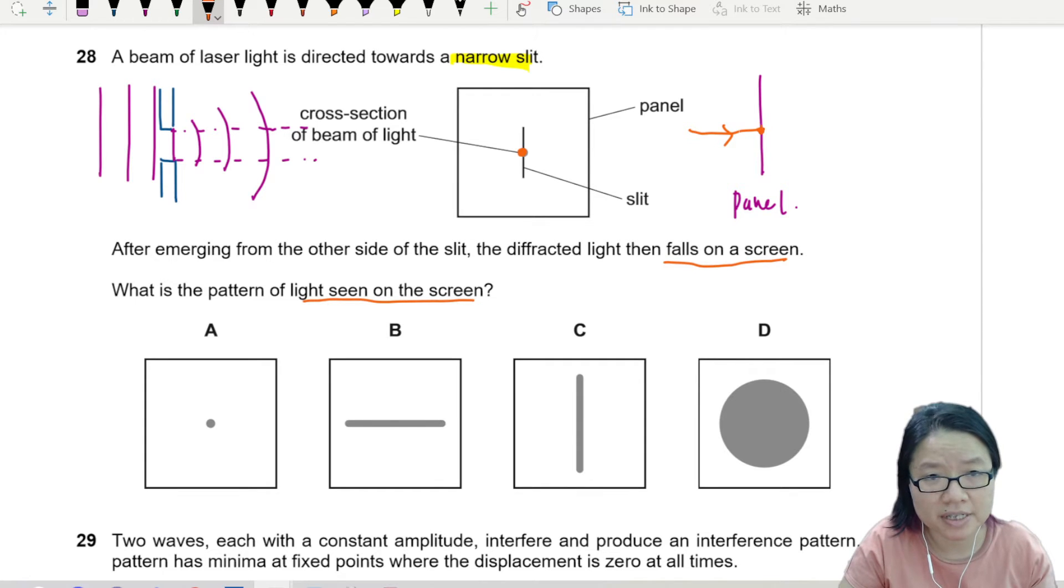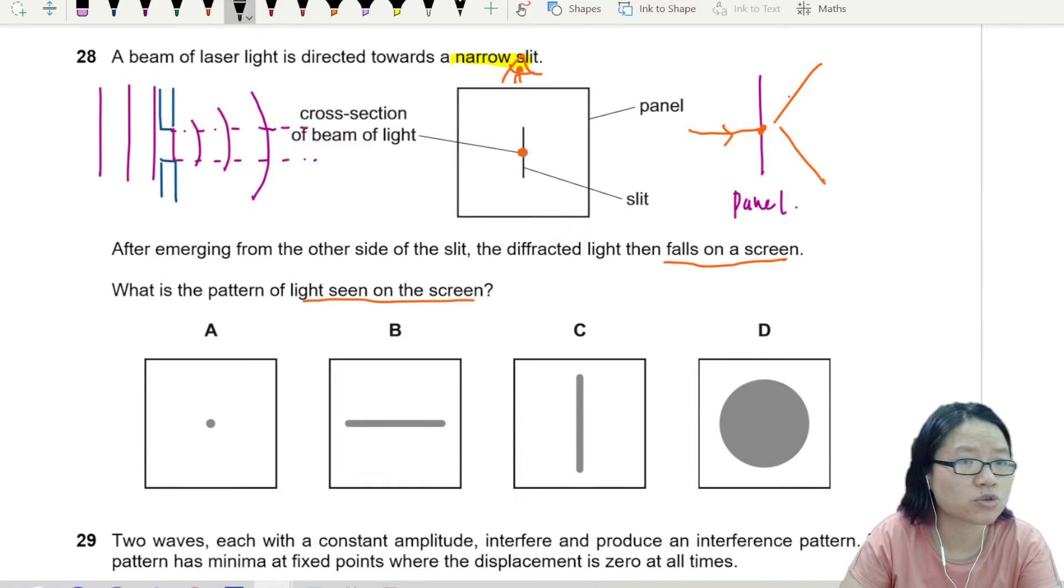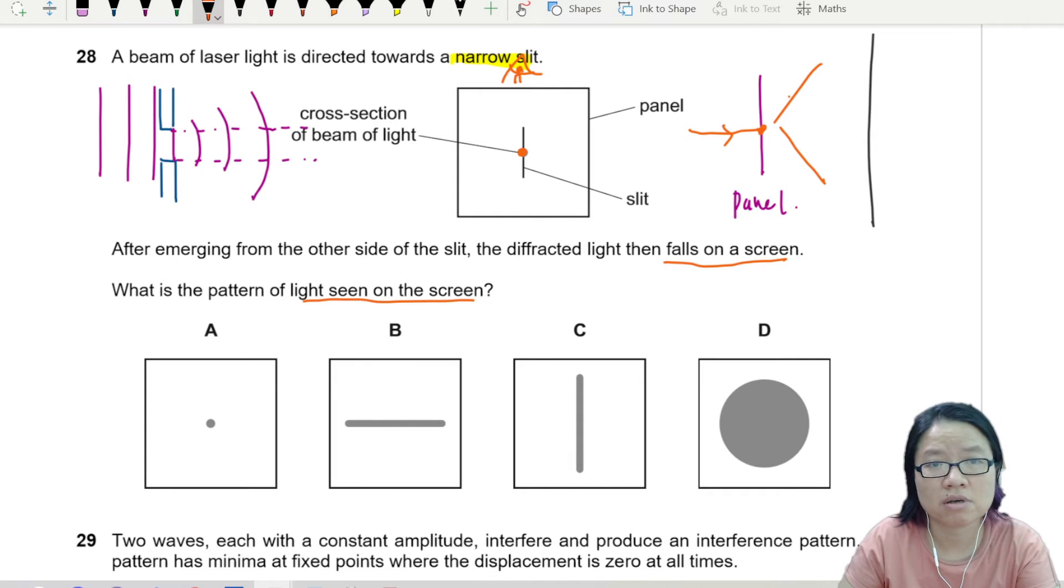Because this is the slit, I view from the top here, I cannot see the slit if I look from the top. So what will happen is that the wave will spread out in this way. And then if I throw a screen at the back, what I will see on the screen is actually a horizontal line.